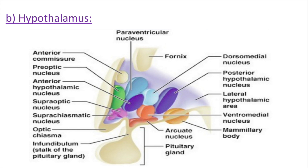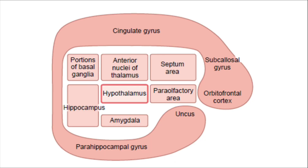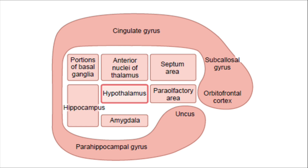Stimulation of the motor cortex — anterior to the central sulcus — usually causes excitation of the vasomotor center. Regarding the limbic system, stimulation of the anterior temporal lobe, orbitofrontal cortex, cingulate gyrus, amygdala, septum, and hippocampus can either cause excitation or inhibition of the vasomotor center, depending upon the precise portion of the limbic system stimulated.